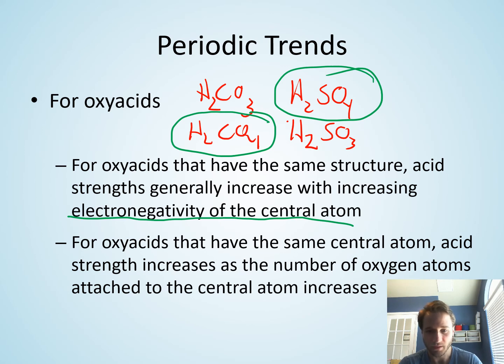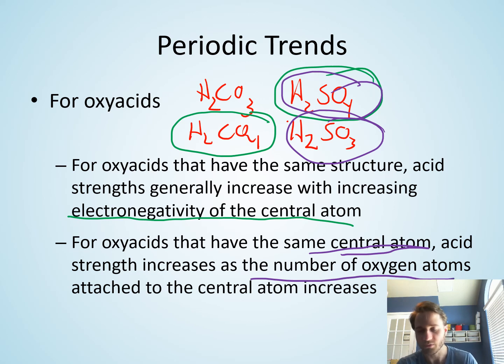Now if you're comparing instead H2SO4 and H2SO3 - so in this case the central atom is the same - the strength of the acid increases with the number of oxygen atoms. So in this case, H2SO4 is a stronger acid than H2SO3, which is like H2CO4 is a stronger acid than H2CO3.